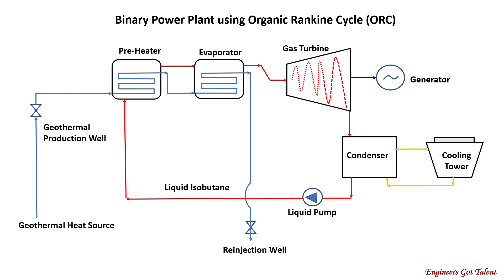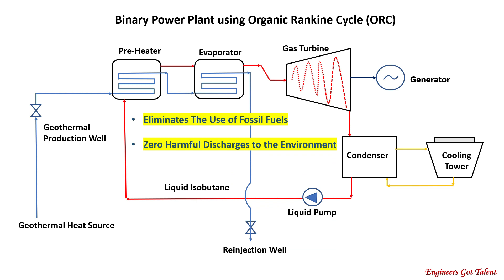The ORC system, or the Organic Rankine Cycle System, has proven beyond reasonable doubt that it can produce electricity even from heat sources with low temperatures, such as from combustion of biomass, from industrial waste heat, and from geothermal heat sources at low temperatures in a binary power plant. Notwithstanding, the Organic Rankine Cycle System also provides significant environmental benefits: it eliminates the use of fossil fuels to produce electricity, it has zero harmful toxic discharges because it is a closed-loop system, and it has zero carbon emissions because there is no burning of fuels.